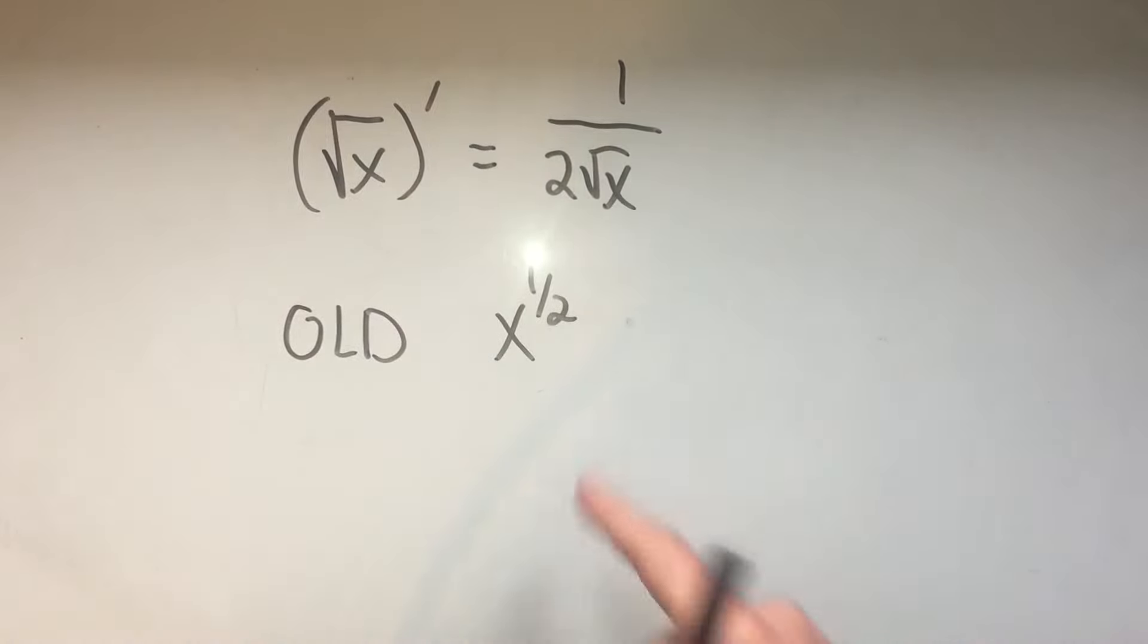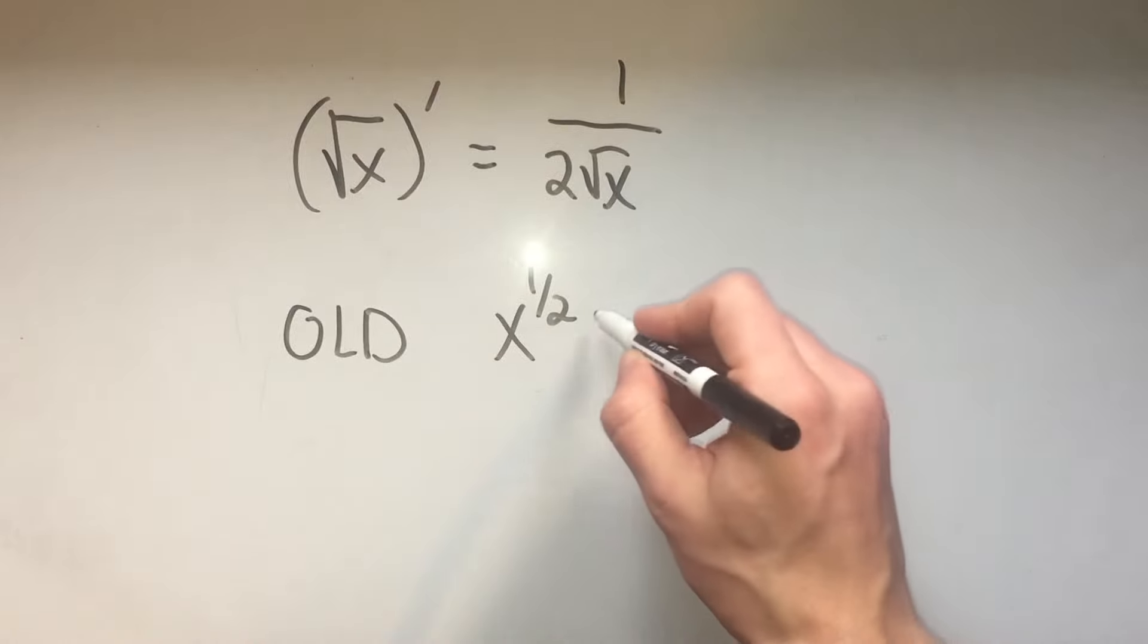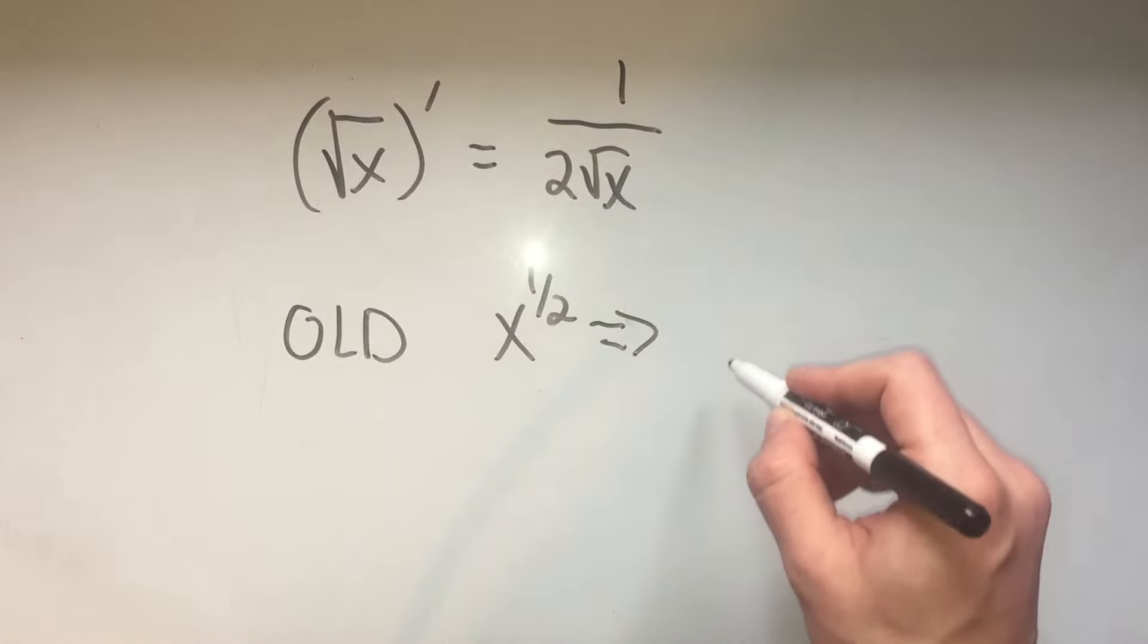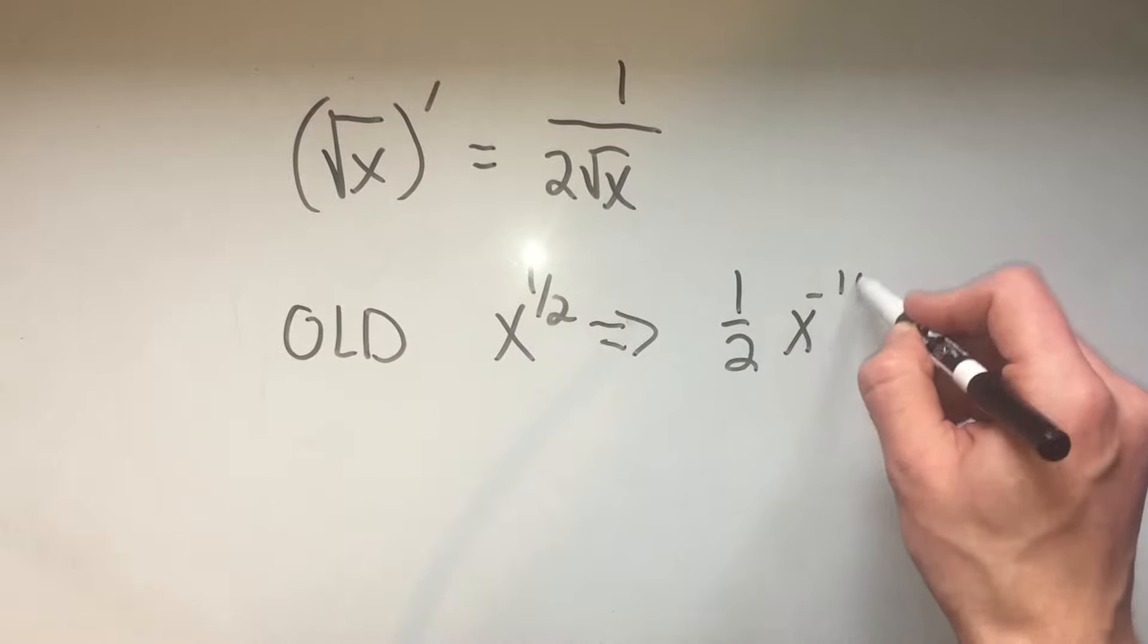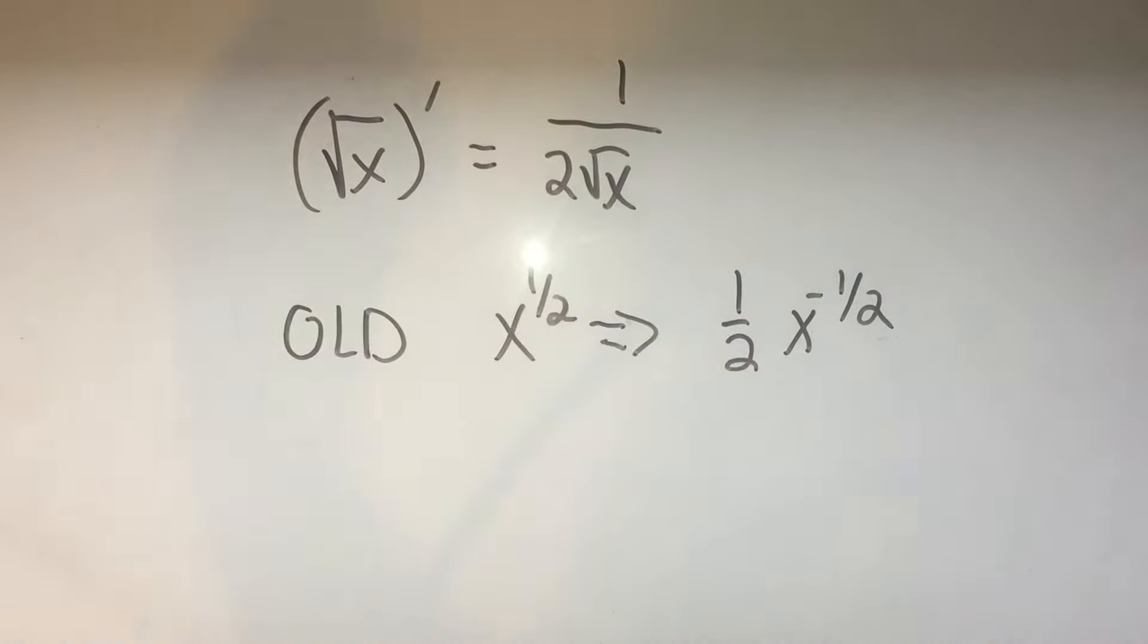And that's the same thing that you would get if you took the derivative here, right? The derivative of x to the one-half is one-half x to the minus one-half, which is the same thing as I have written here.